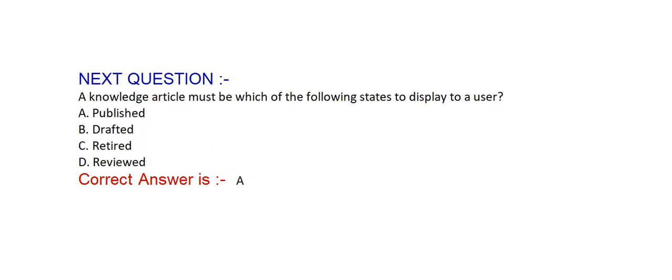Next question: A knowledge article must be which of the following states to display to a user. Option A: published. Option B: drafted. Option C: retired. Option D: reviewed. Correct answer is Option A, published.